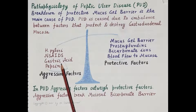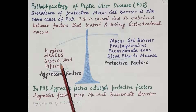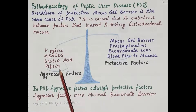Drugs like H2 antagonists and proton pump inhibitors suppress the secretion of gastric juice by the parietal cells. Antacids are another category of drugs that neutralize gastric acidity. Excess secretion of pepsin also causes peptic ulcer disease.